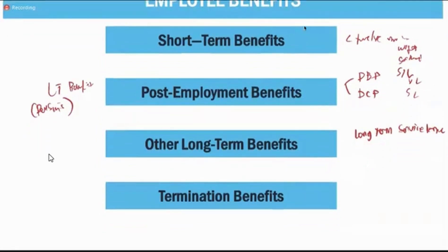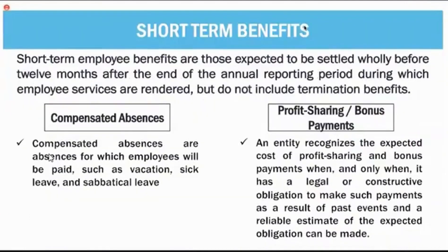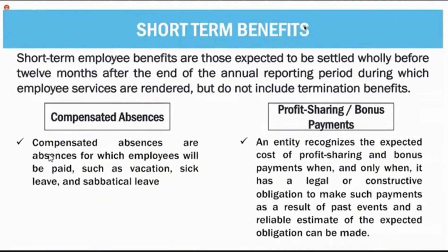Short-term benefits are those expected to be settled wholly before 12 months after the end of the annual reporting period during which employee services are rendered, but do not include termination benefits. Although termination benefits may also be payable within 12 months, under IAS 19 they are classified as a separate category and should not be included in short-term benefits.